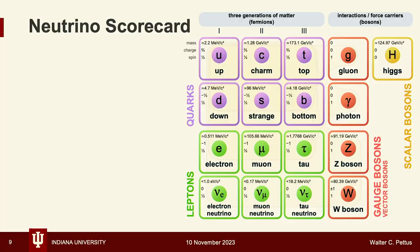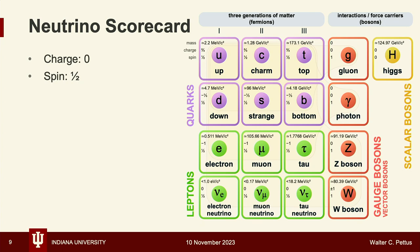Tallying up what we know about neutrinos in the Standard Model: they must be chargeless, spin one-half. We've since learned they only interact via the weak force and gravity — that's why they're so hard to measure. They're only observed as left-handed particles, which is part of the motivation for them being massless. And their mass we don't know — they are the only fundamental particles in the Standard Model for which we don't know the mass. We're sitting at upper limits.